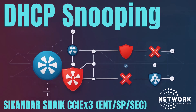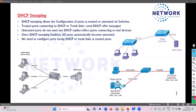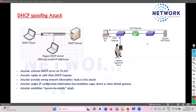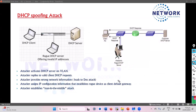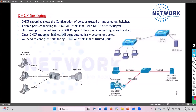Bismillahirrahmanirrahim. Rabbi zidni ilma. Let's try to see the solution. As we have discussed, the DHCP spoofing attack is where the attacker is going to introduce some kind of fake DHCP server, where he can provide the wrong information or maybe a wrong gateway, which can lead to a man-in-the-middle attack. We already discussed this in the previous section, so here we'll try to see what is the solution.